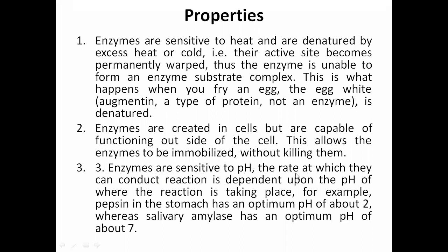The third property: enzymes are sensitive to pH. The rate at which they can conduct reactions is dependent upon the pH of where the reaction is taking place. For example, pepsin from the stomach has an optimum pH of about 2 — because HCl is secreted there creating an acidic environment. Whereas salivary amylase has an optimum pH of about 7. So in the digestive system, the mouth and stomach have different pH, and enzyme activity is interfered with accordingly.